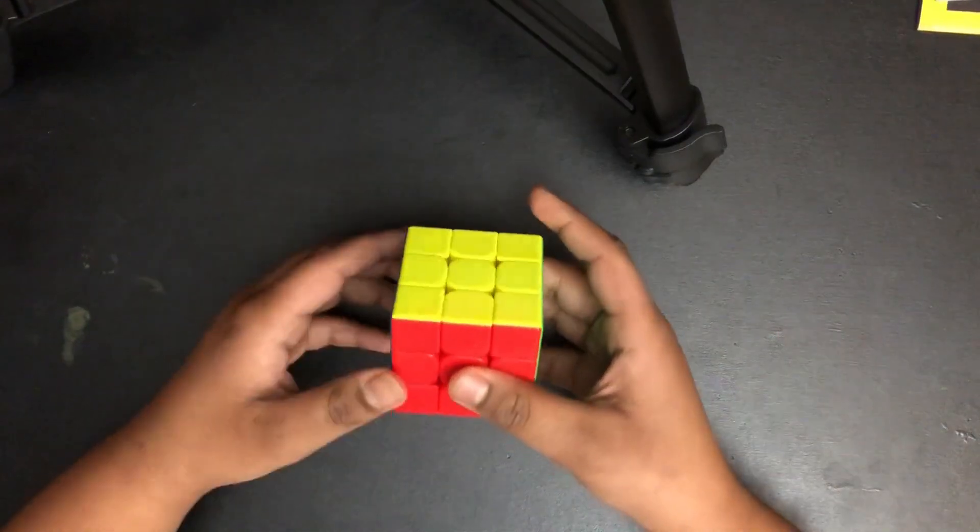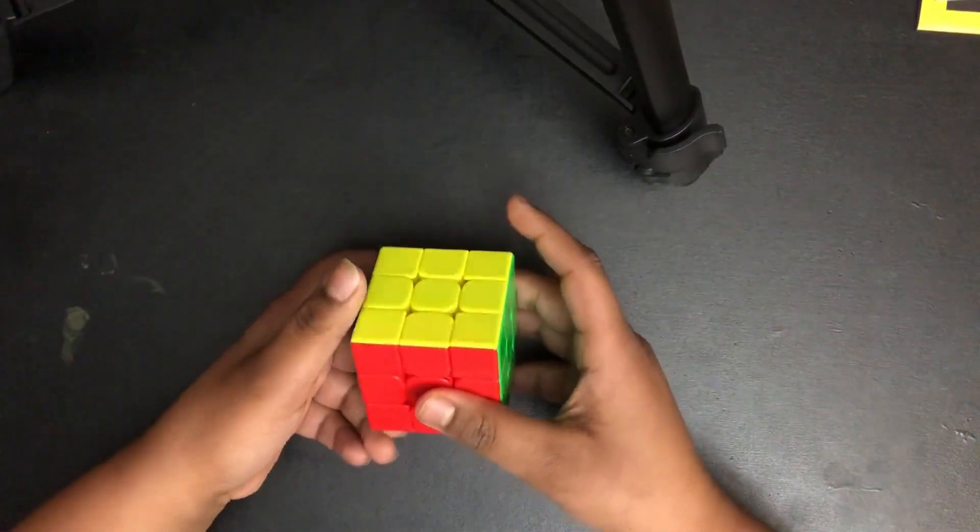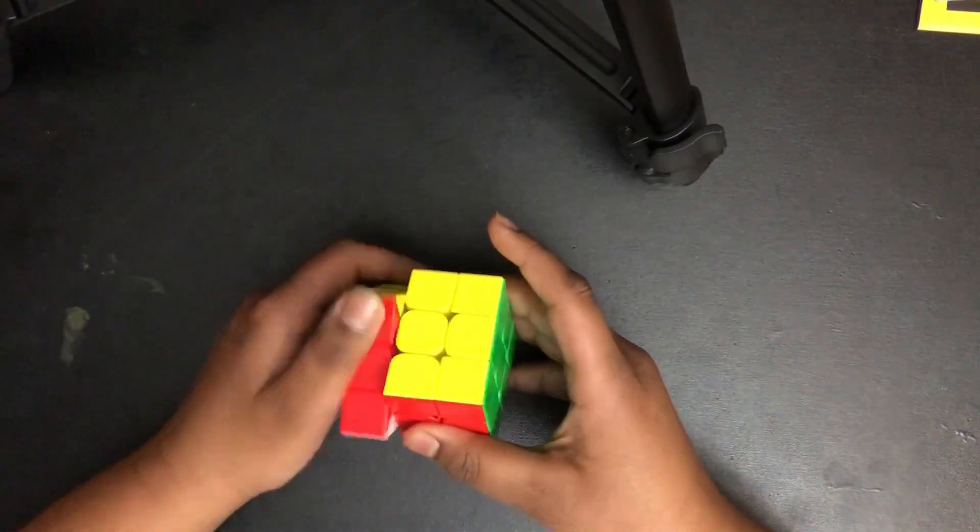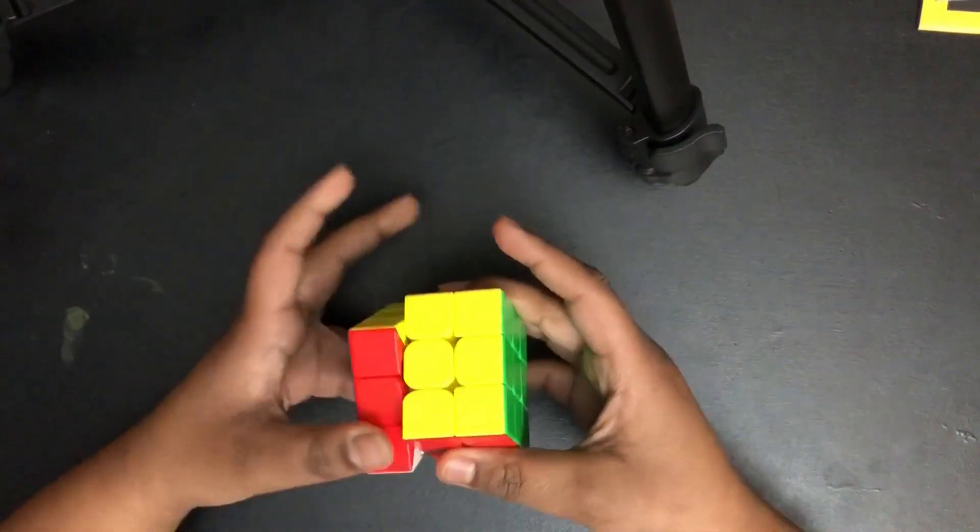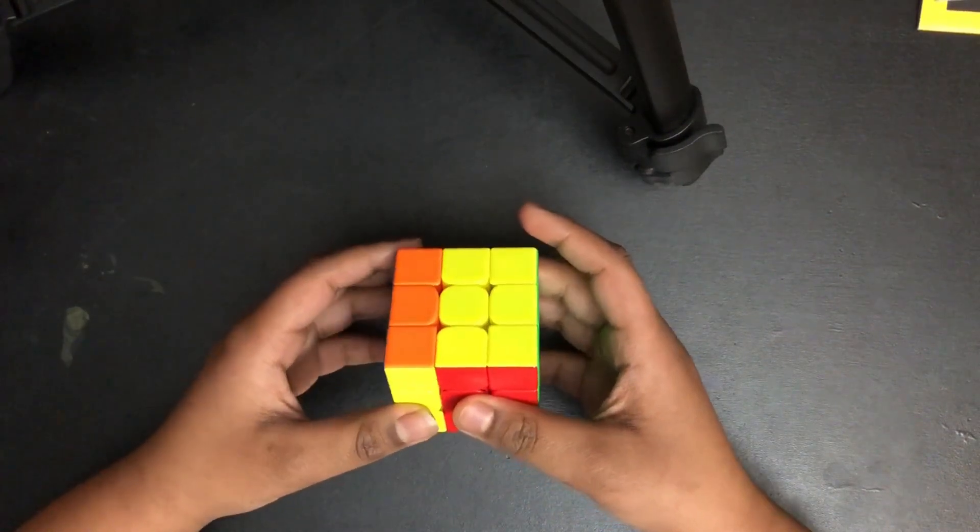And then the next move is L. L is not this, not up, but down. And L prime is up. So L, L prime.